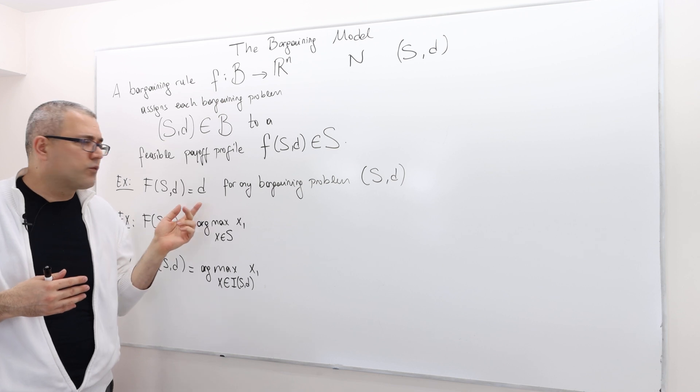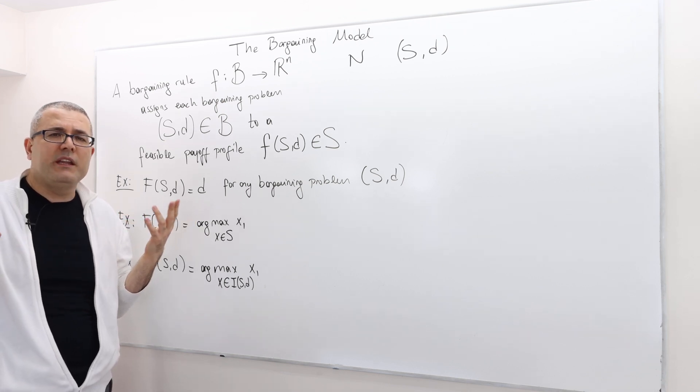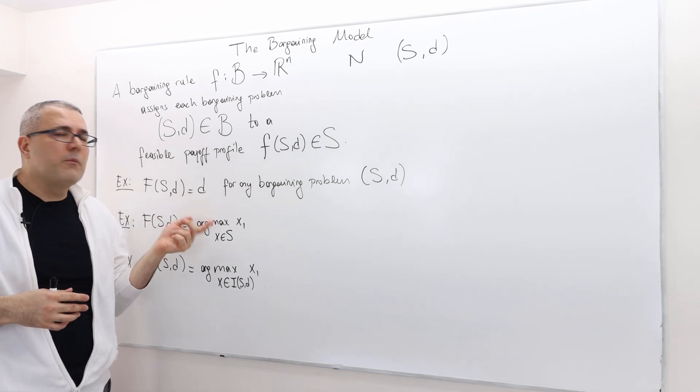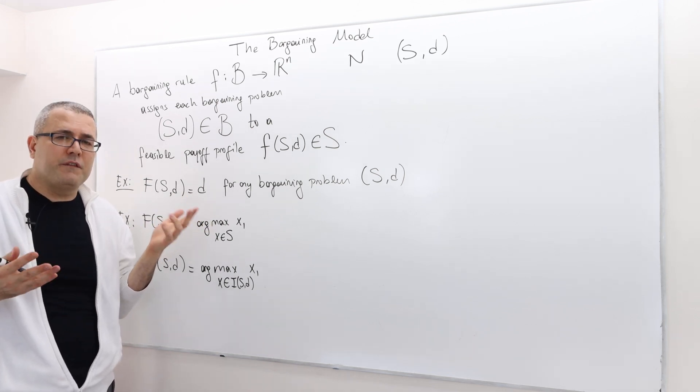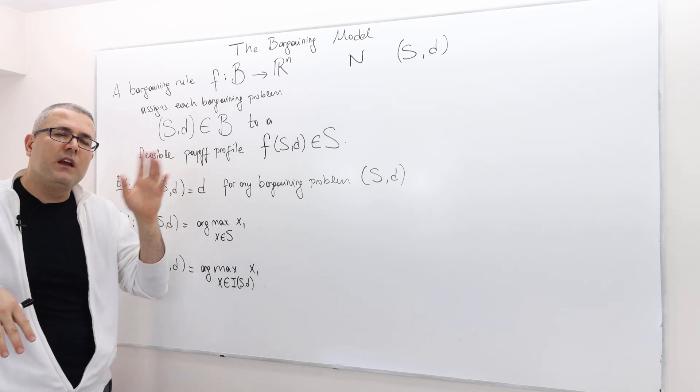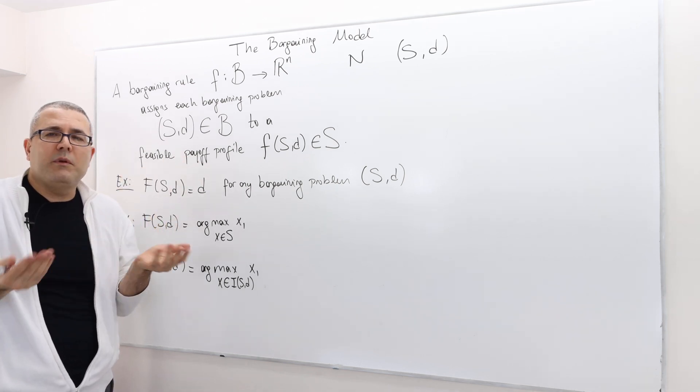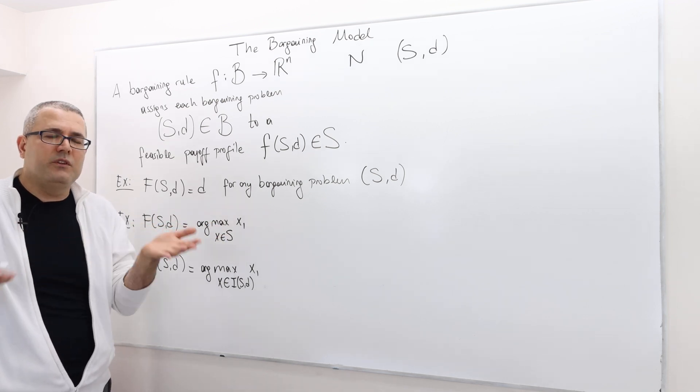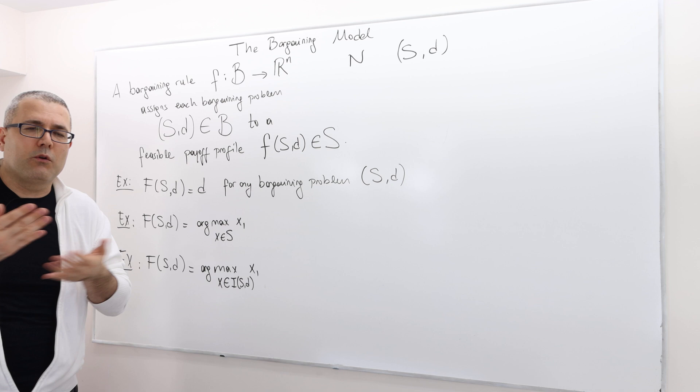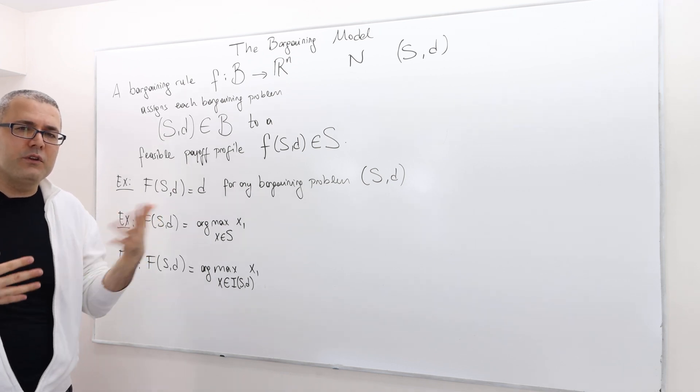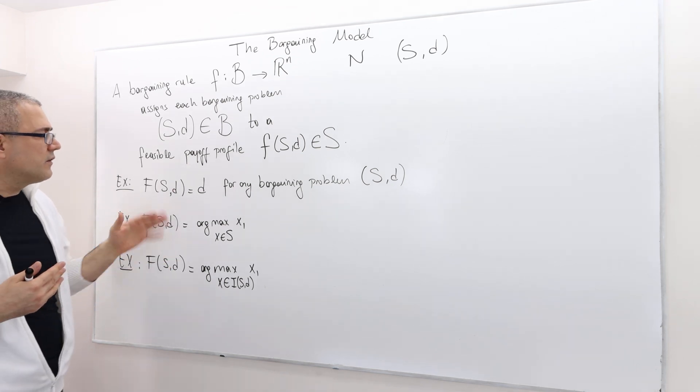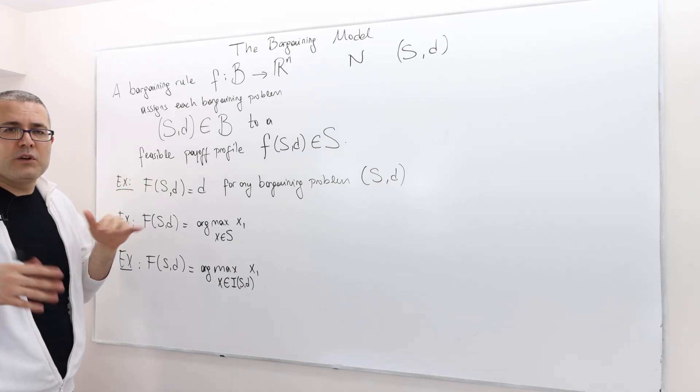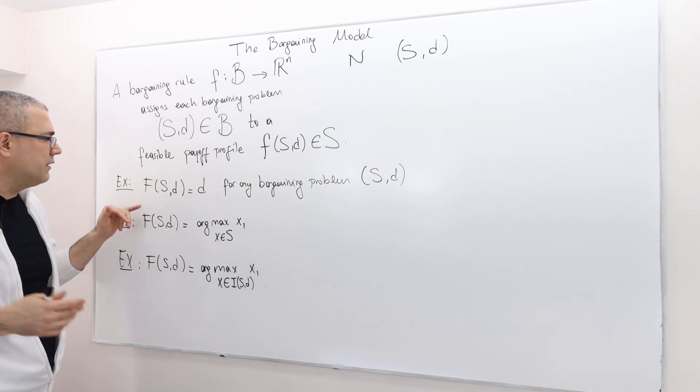This is not a perfect rule. It is, in a sense, a nice rule because it's individually rational. Nobody gets worse than his or her outside option or disagreement point. But this may actually be inefficient. If you consider this buyer-seller problem, it basically says, don't make a trade, which is crazy because these guys can actually come up with some price which is going to give higher utility to both buyer and the seller.